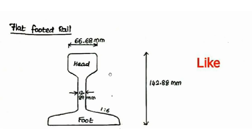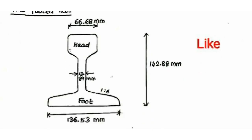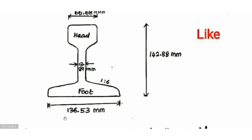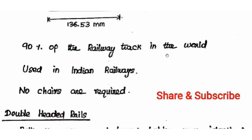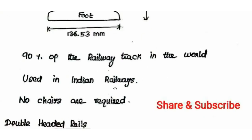The flat footed rail section cross-sectional dimensions: bottom width 136.53 mm, head dimension 66.68 mm, height 142.88 mm, web width 13.88 mm. About 90% of railway track in India uses flat footed rail. In Indian railways, flat footed rails require no chairs — there are no chairs needed.